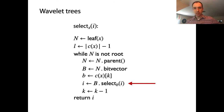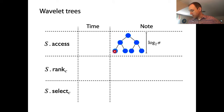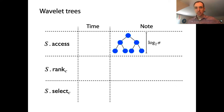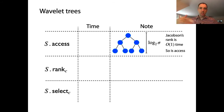We can do them all in constant time — that's what we learned from Jacobson's rank and Clark's select. Let's fill in the table with worst case query time expressions. Assuming a balanced wavelet tree, the depth is about log base 2 of the alphabet size. In the access query inner loop we're doing rank and access, both constant time with Jacobson's rank. So overall we're doing log sigma steps, each constant time — big O of log sigma.